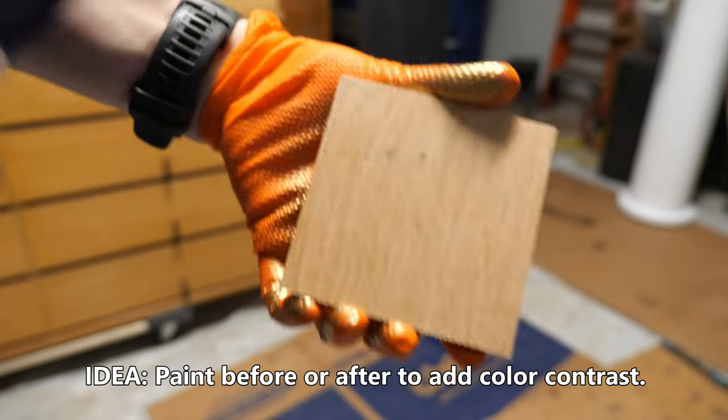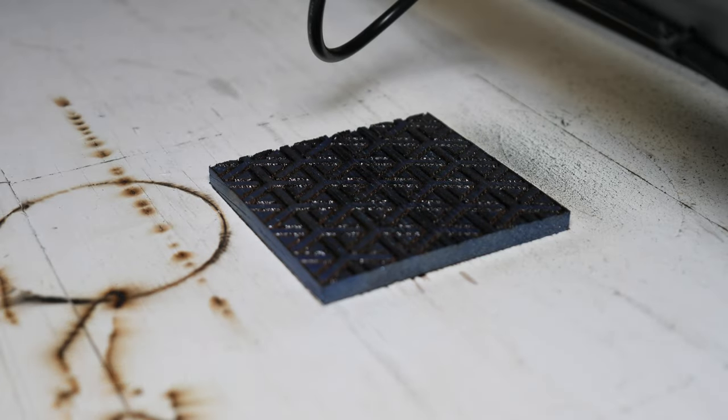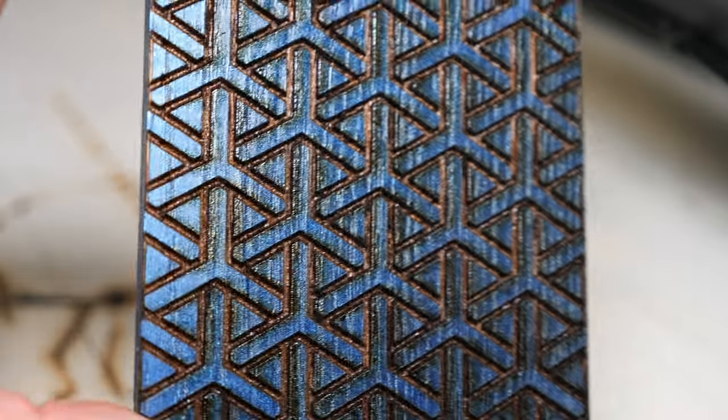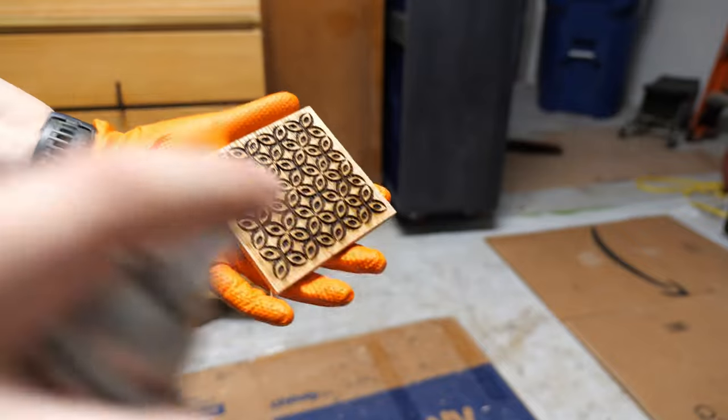When you're engraving things like wood, you have the ability to add color before you engrave it, and then you can create more contrast with that engraved area. You can also paint after and then sand down the non-engraved area to create a different look.